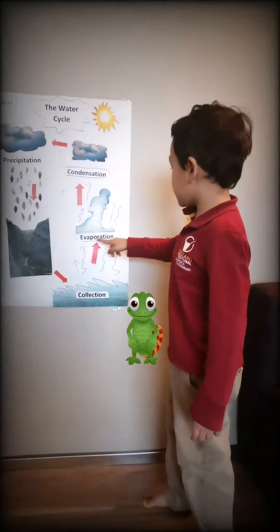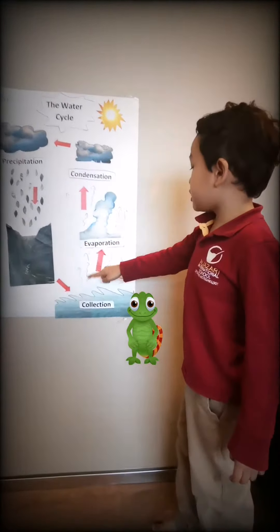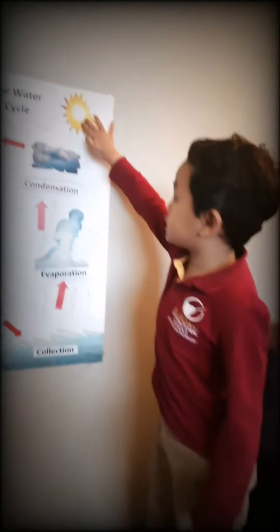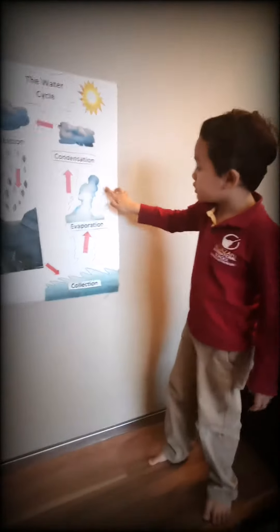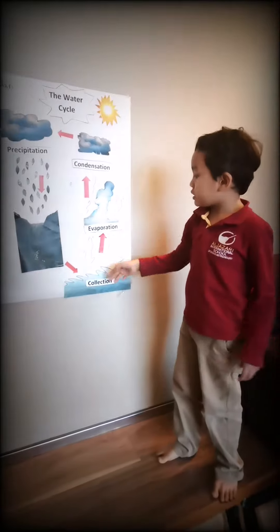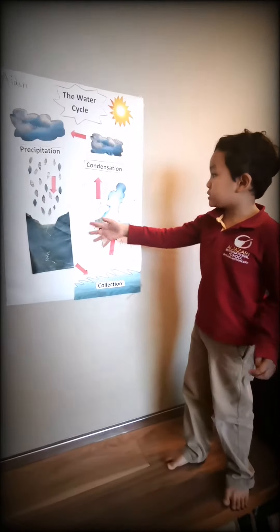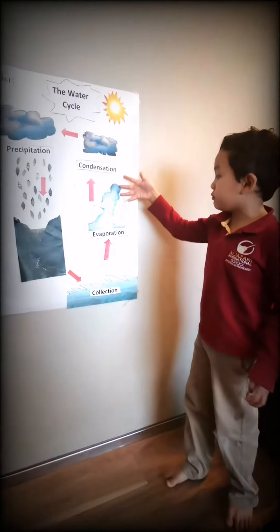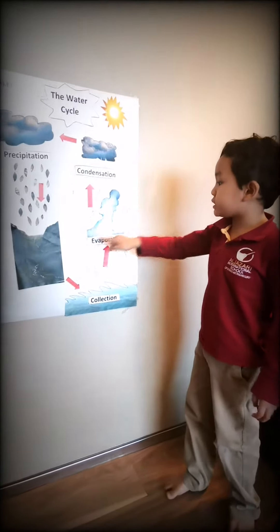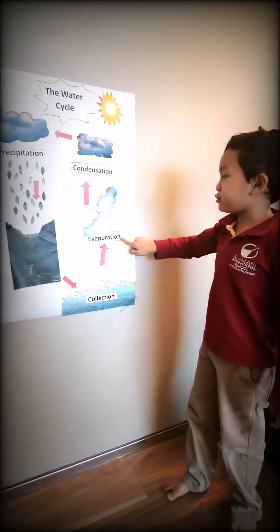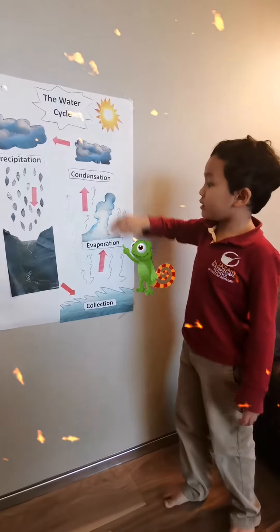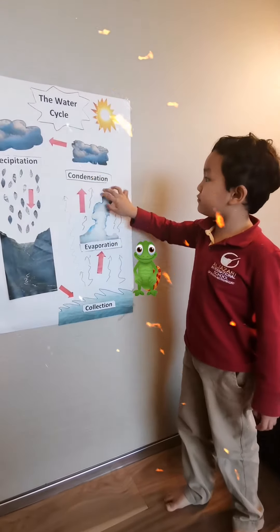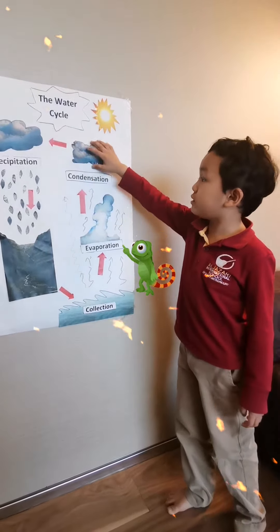And when the sun arises on it, it forms water vapor and that's known as evaporation. And when it forms into cloud,